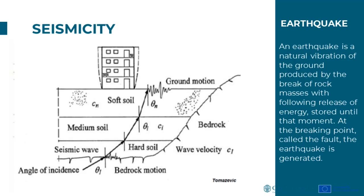An earthquake is caused by high energy release during tectonic motions. This energy propagates in many directions in the form of seismic waves. The waves have a certain propagation velocity and propagate through the soil in several types. The most dangerous from the point of view of structural engineering are the so-called surface waves that propagate with lower group speed than body waves in the interior of the earth, however quickly enough to cause damage.